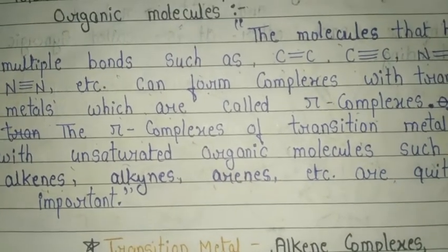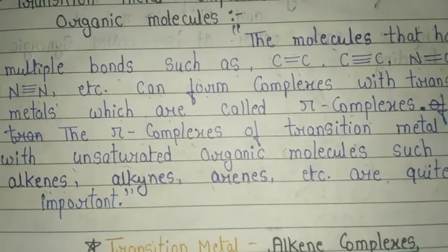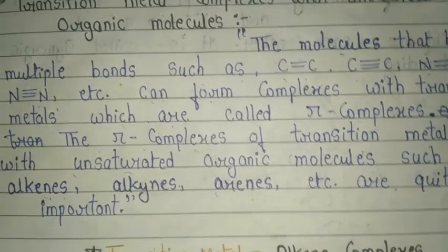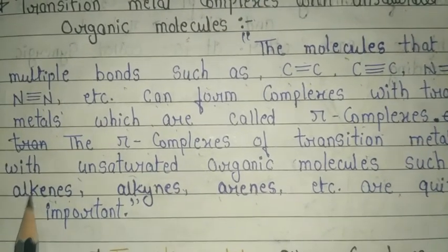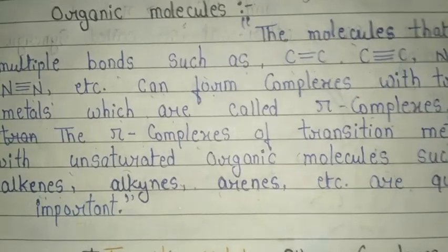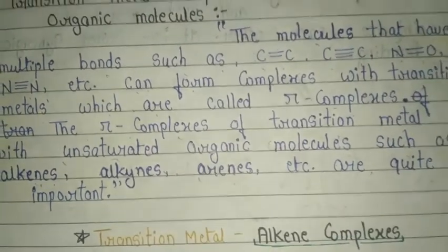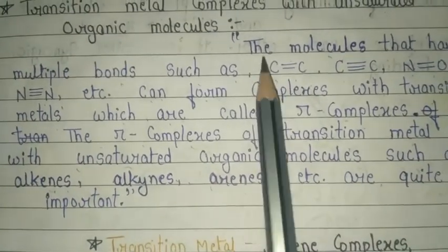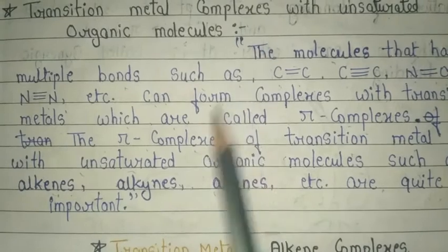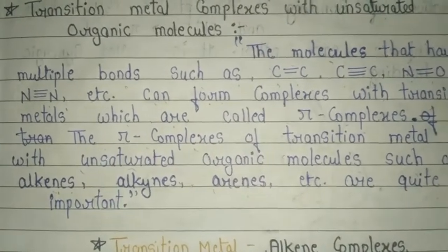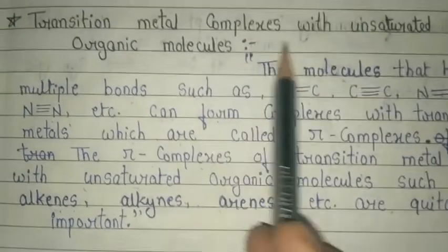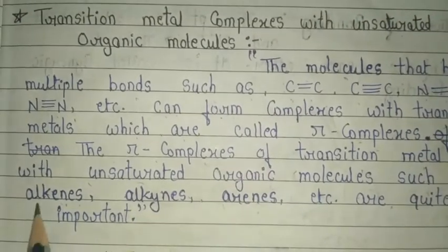Alkenes, alkynes, and arenes are examples of these quite important transition metal complexes that we need to study from the semester exam point of view. If you get a question about what a transition metal complex is, you can write this definition and give these examples.